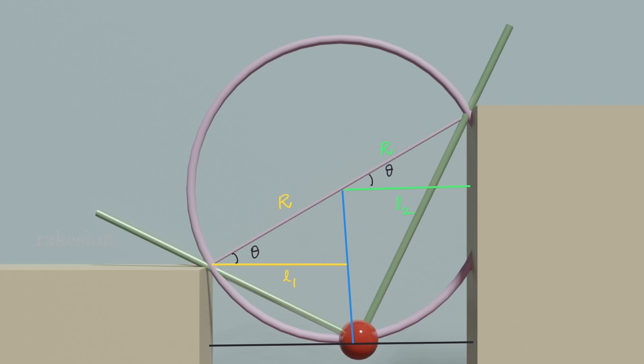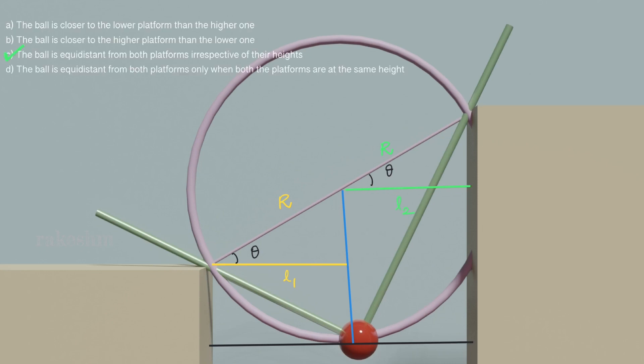So out of the four options that we have, the option C: the ball is equidistant from both the platforms irrespective of their heights is the correct option.